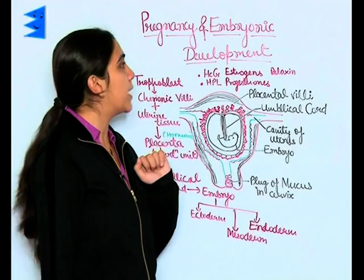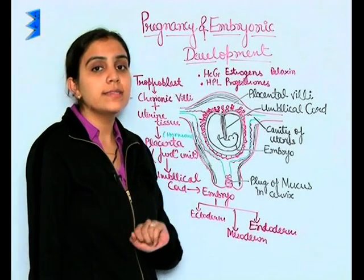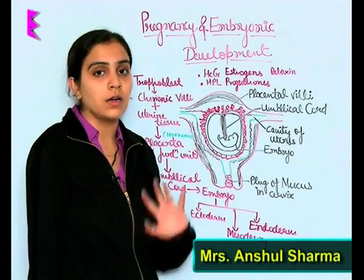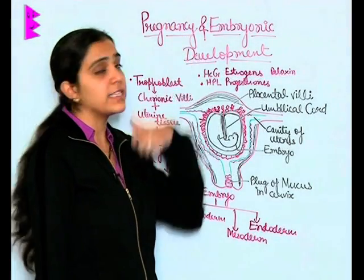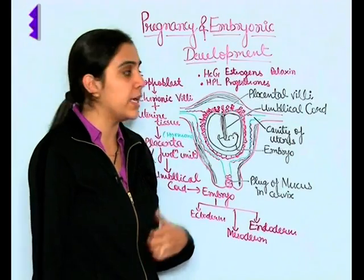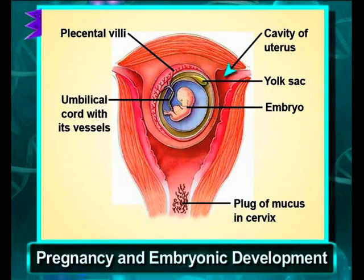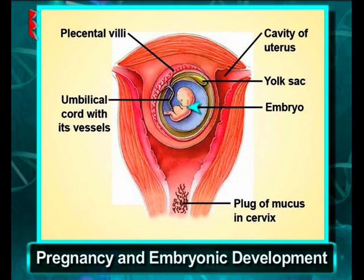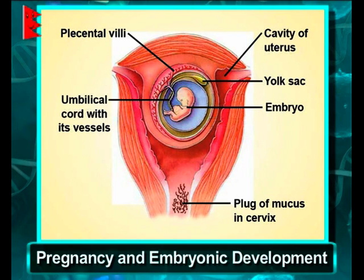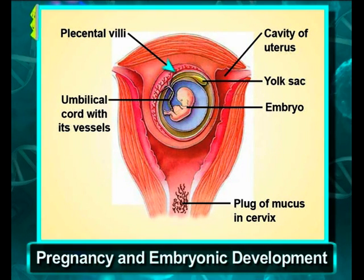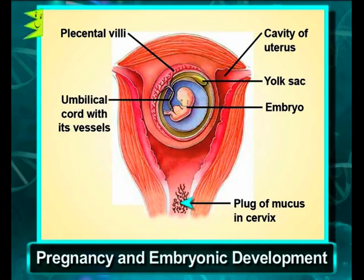The next stage is pregnancy and embryonic development. Once implantation has occurred, the gestation period of 9 months, termed as pregnancy, starts in human beings. You can see in this diagram — this is the cavity of uterus, the embryo is inside it. The embryo is attached outside through this umbilical cord, these are placental villi, and this is the plug of mucus in the cervix.